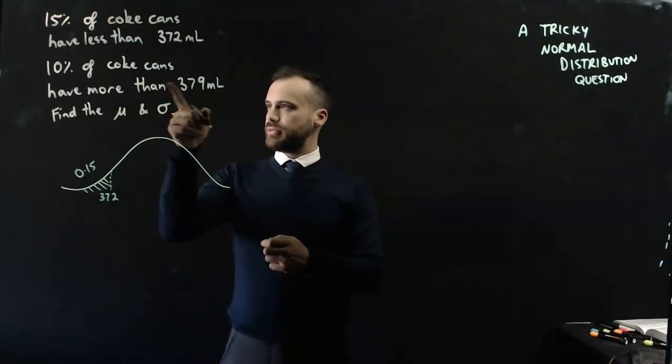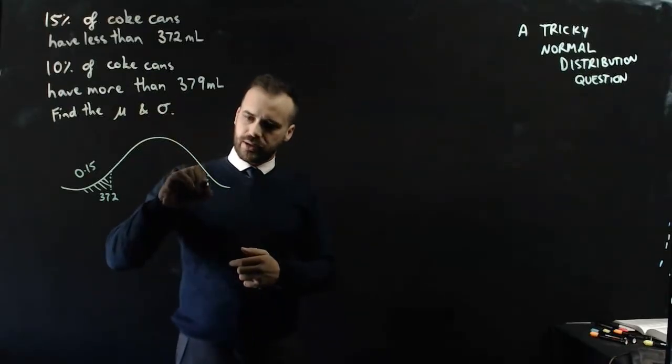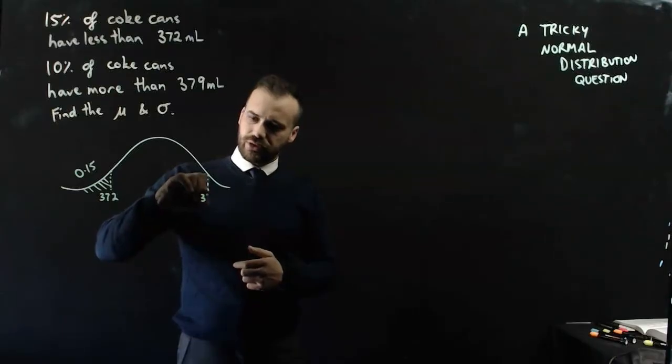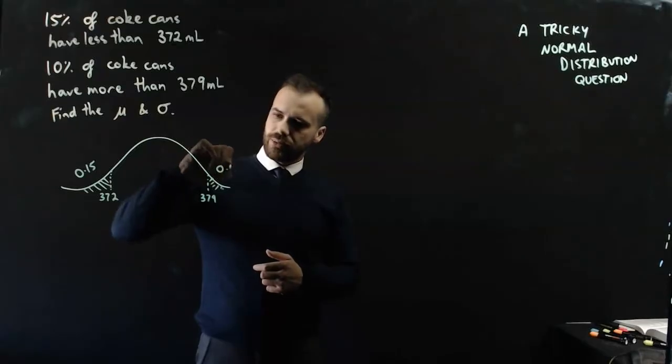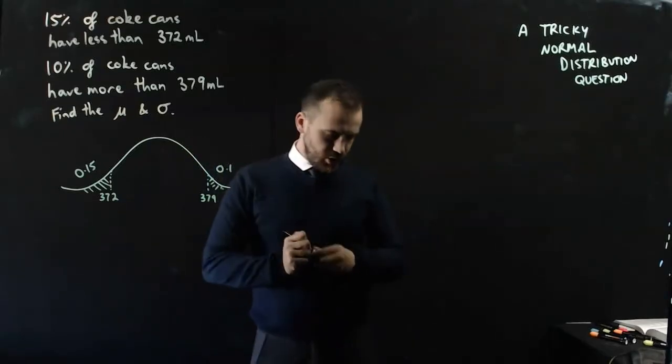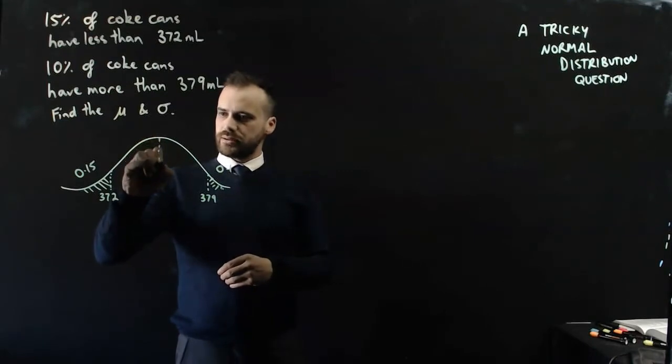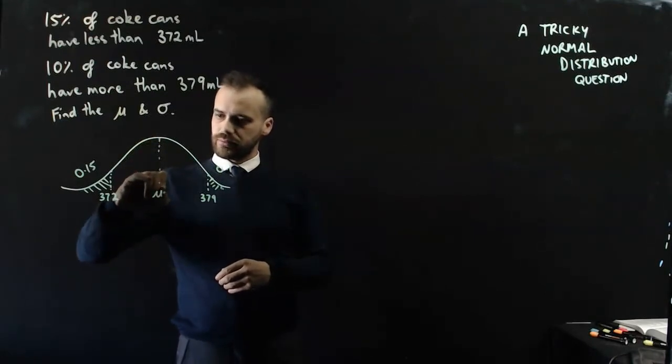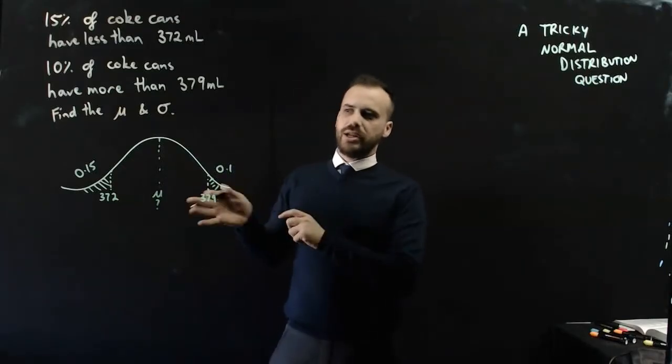Now, 10% of Coke cans have more than 379 ml. So I can put in a dotted line here for 379 ml, and that area there is going to be 0.1. What I'm being asked is, what is the mean? But also, what is the standard deviation? How spread out is this?